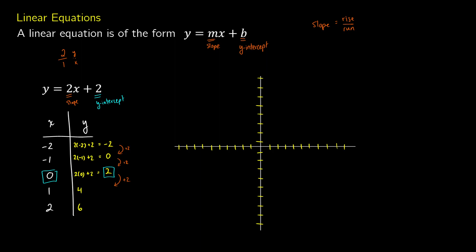If we were to plot this with points, the first row corresponds to the point negative 2, negative 2. The second point is negative 1, 0. The third point is 0, 2. Then we have 1, 4 and 2, 6. So we can plot all of these — there's negative 2, negative 2; negative 1, 0; 0, 2; 1, 4; and 2, 6.